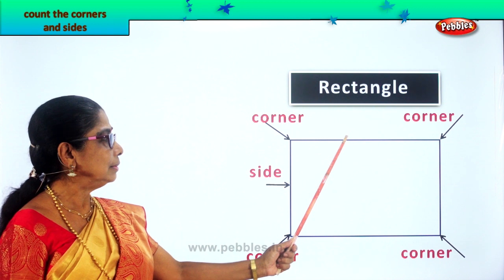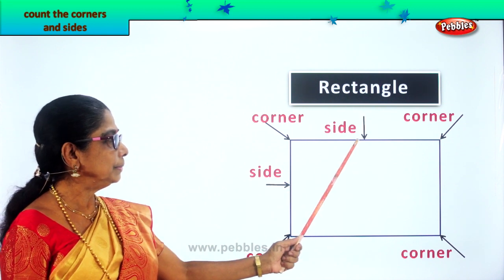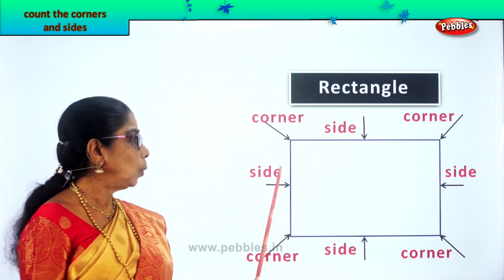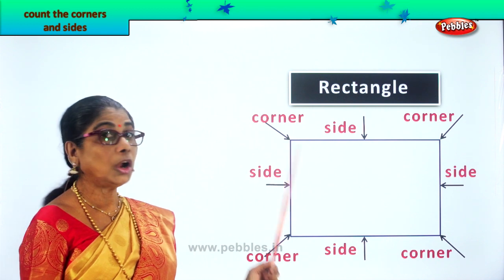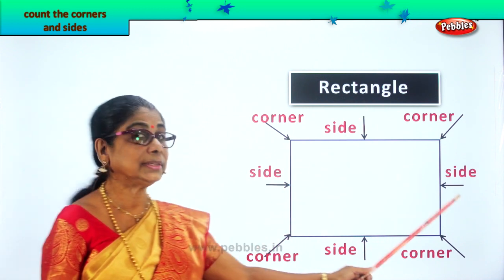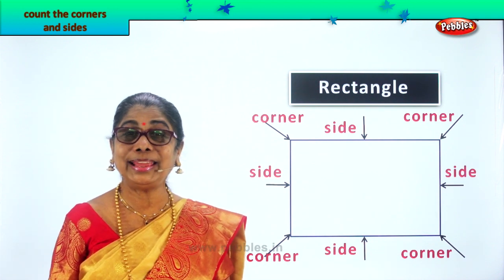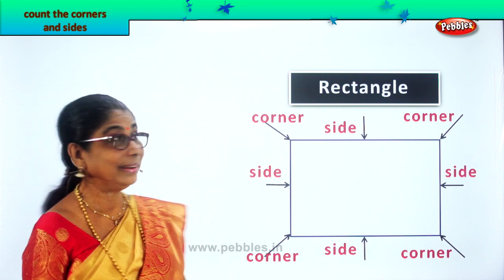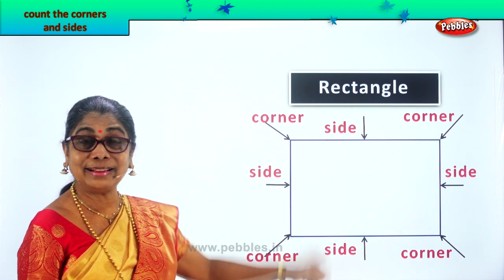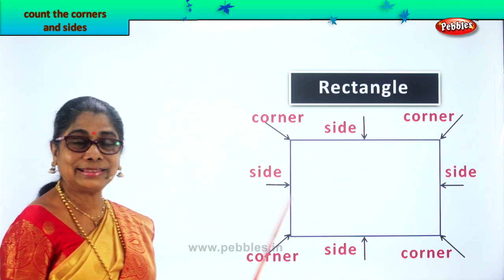And how many sides? One, two, three, four. Four corners, four sides. A rectangle — and opposite sides are equal. So today we enjoyed counting the corners of a rectangle and counting the sides of a rectangle.